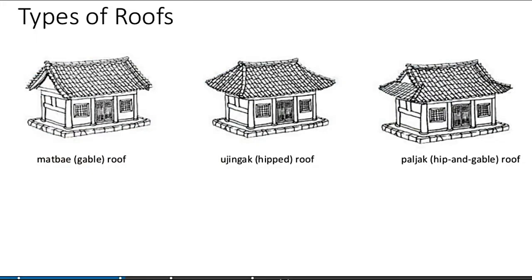Types of roofs in Korean architecture: the Mat-bae or the gable roof, the Ojingak or the hip roof, and the Paljak, the hip-and-gable roof.